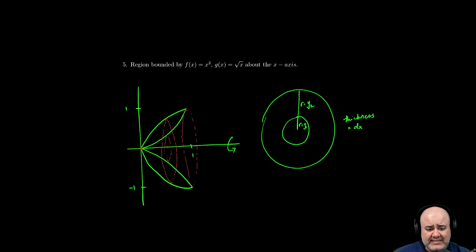Which means as I start labeling stuff, I need to start thinking about the radius or the radii of the two representative circles in terms of x.